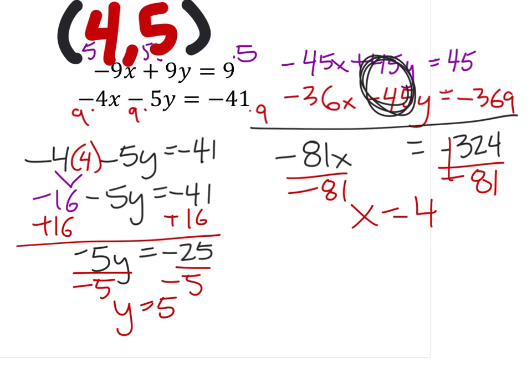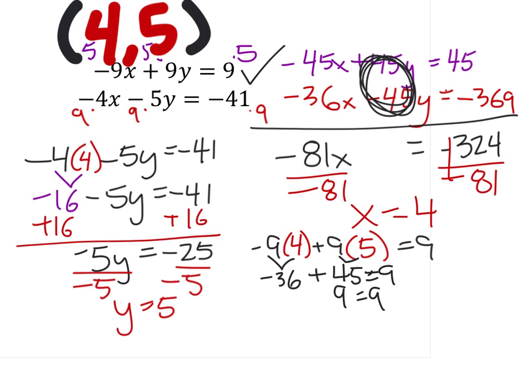But the final thing we're going to want to do is check this. So I'm going to use the top equation first: -9x + 9y = 9. And combining these, -9 times 4 is -36, 9 times 5 is 45. This needs to equal 9, and if it's not true, we know we did something wrong. So -36 + 45 is 9, which does equal 9. So this first equation checks off.